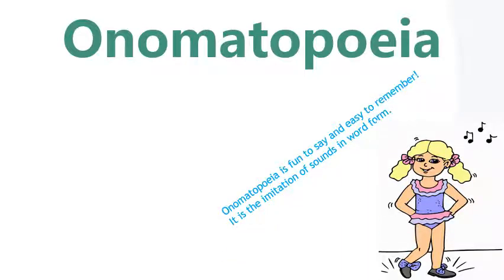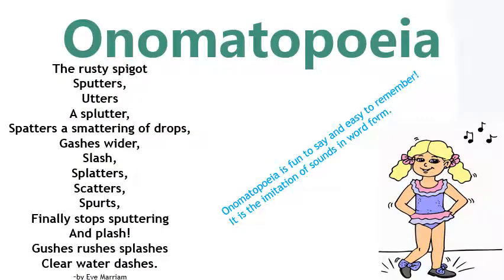Now we go on to onomatopoeia — that is fun to say and easy to remember. It is the imitation of sound in word form. With this figurative language, the words sound like what they describe and are fun and easy to remember. For example: 'The rusty spigot sputters, utters a splatter, spatter, and smattering of drops, gushes wider, slush platters scatter, spirts, finally stop sputtering and splash, gushes, rushes, splashes clear water dashes.' All those 's' words like sputter, utters, scatter, spirts follow on from each other.